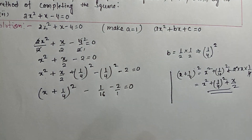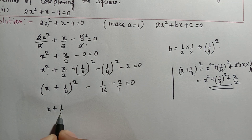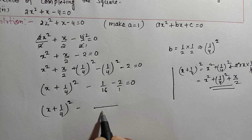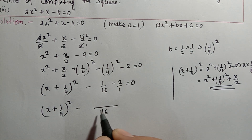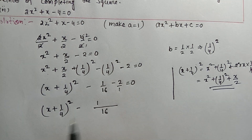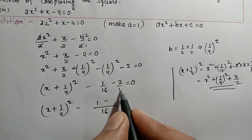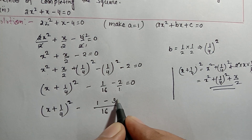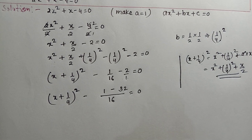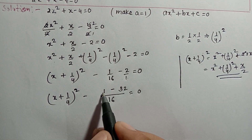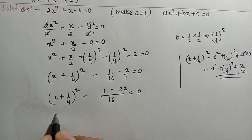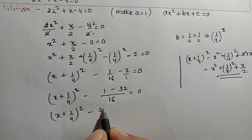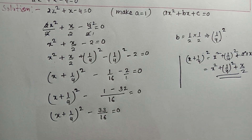Taking LCM of 16 and 1, which is 16: -1/16 - 2 = (-1 - 32)/16 = -33/16. Since both terms are negative, 32 + 1 = 33. So the equation becomes: (x + 1/4)² - 33/16 = 0. We need to find roots, so we transfer -33/16 to the other side: (x + 1/4)² = 33/16.